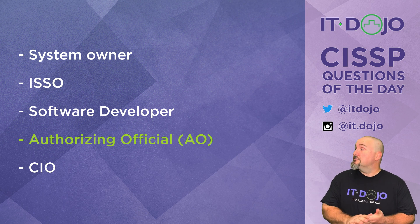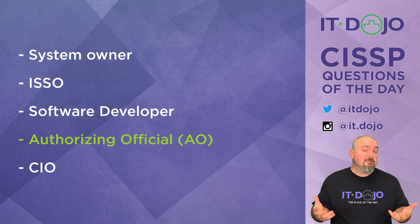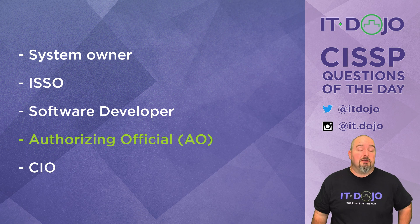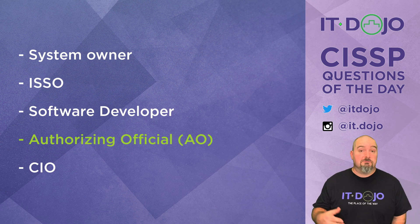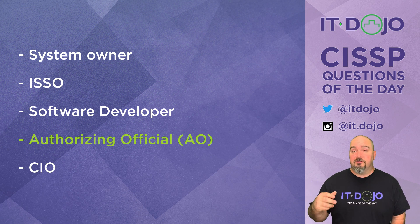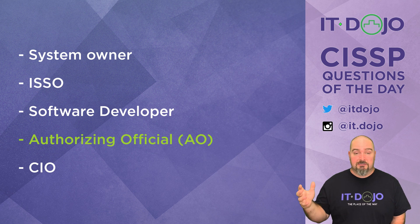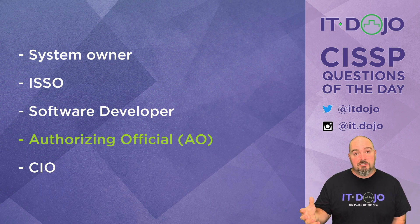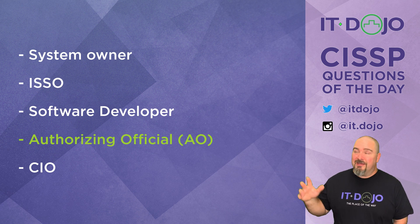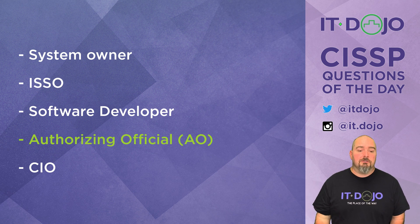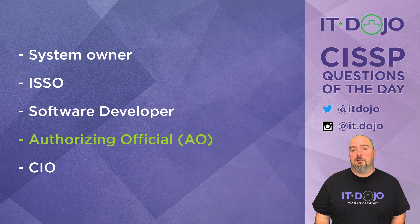The last choice on the list is the CIO — and no, it's not the CIO's job by definition to do that. The CIO is responsible for making sure the budget is there to implement all the information security requirements, that it's actually being done, and that the organization is complying with any laws or regulations. But in this question, we were looking for the authorizing official.